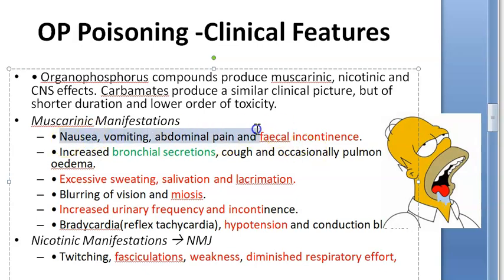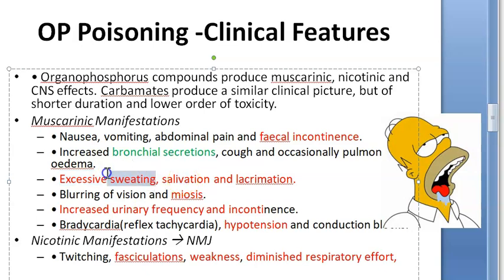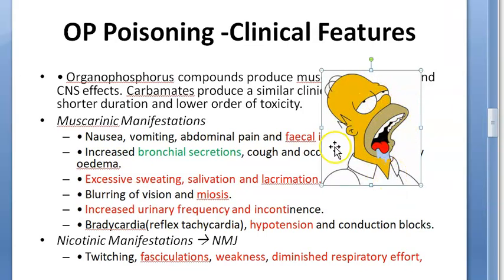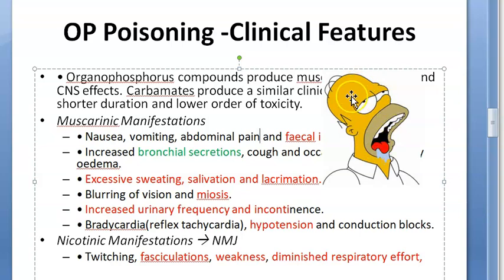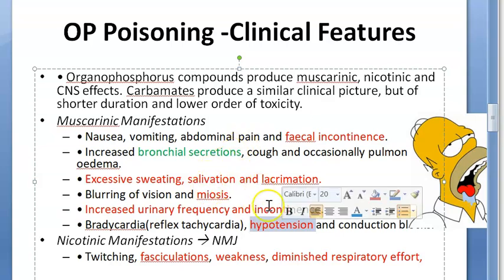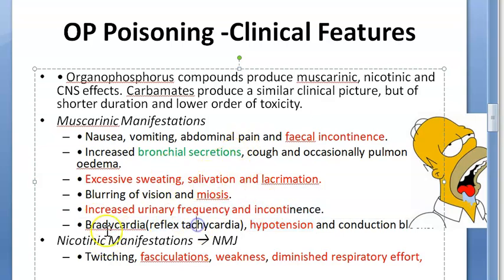The muscarinic effects of OP poisoning include nausea, vomiting, abdominal pain, fecal incontinence, increased urinary frequency, urinary incontinence, increased bronchial secretions, sweating, salivation, and lacrimation. There is miosis, confusion, coma, convulsions, and hypotension. Bradycardia can occur, or sometimes reflex tachycardia — this can be confusing.